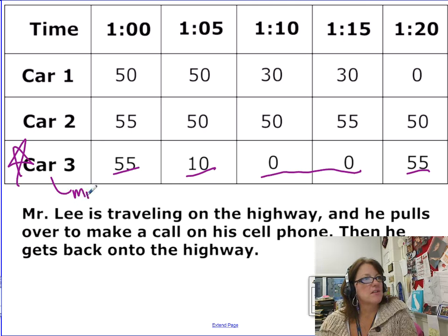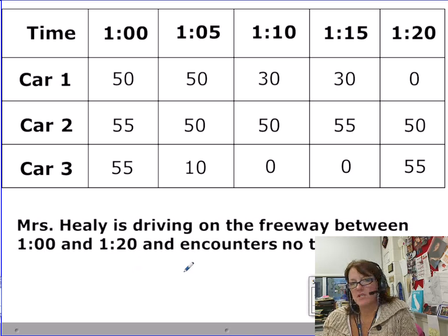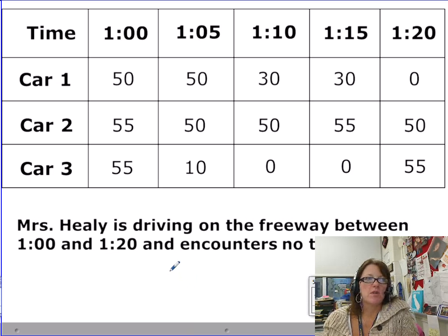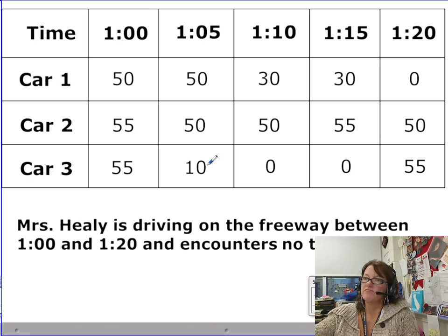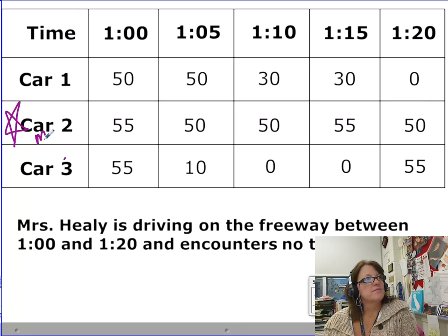You can just put on your notes here that this one is Mr. Lee, and right here this is where he's making a phone call. All right, next. This time we have Mrs. Healy. She happens to be driving on the freeway between 1 o'clock and 1:20, and nice, she encounters absolutely no traffic. So she gets on the highway, she's cruising right along. Which one of these situations fits that? As you look through it and interpret it, you're looking along, there's no stops or anything on here. So Mrs. Healy is car number two.